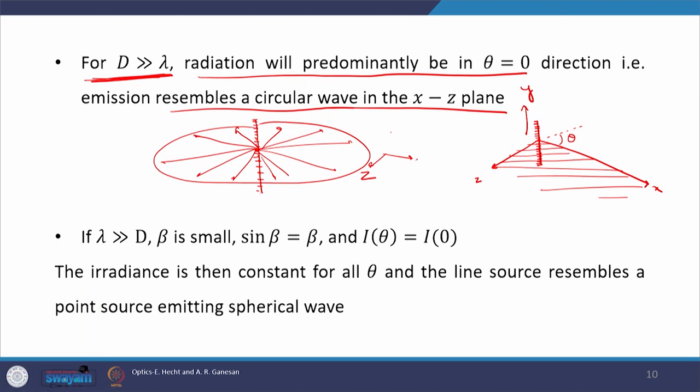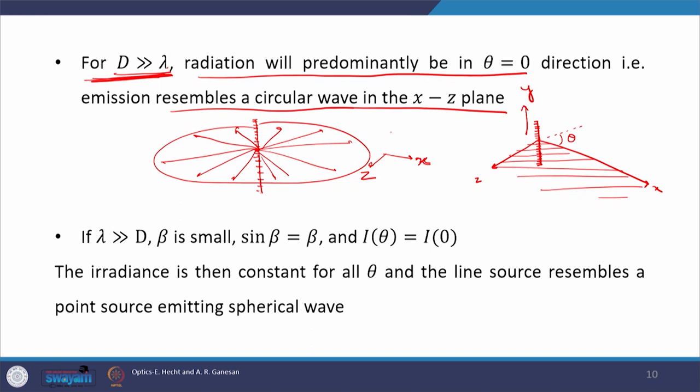The emission is confined to the XZ plane only. The line charge is expected to emit circular wavefronts, but through our calculation we find that when D >> λ, the whole line charge behaves as though it has reduced to a point charge, and this effective point charge emits a circular wave — not a spherical wavefront — confined to the XZ plane.